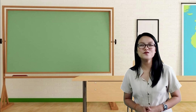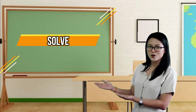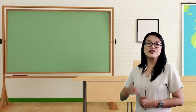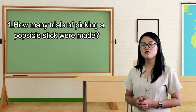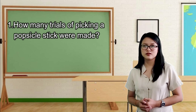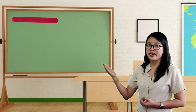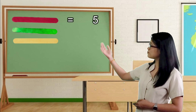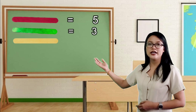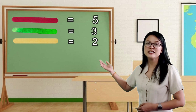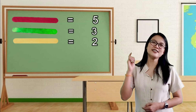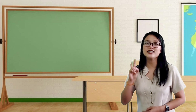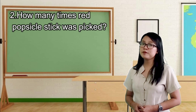The third step in solving routine and non-routine problems is to solve. The first question is: how many trials of picking a popsicle stick were made? We have to get the sum of the red, green, and yellow popsicle sticks — five, three, and two. The second question is: how many times was the red popsicle stick picked?